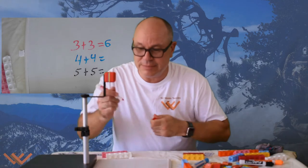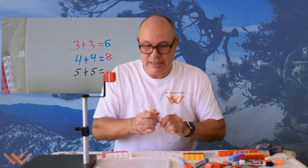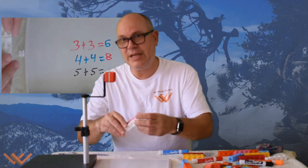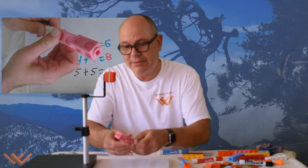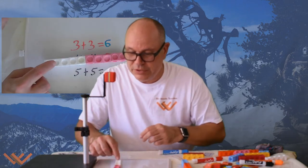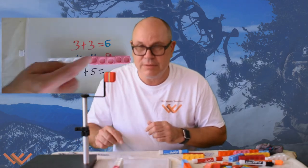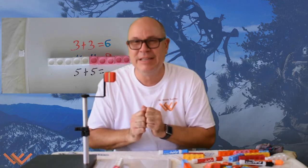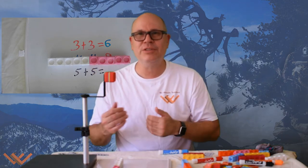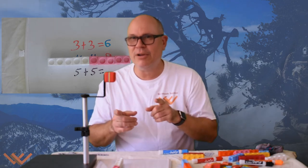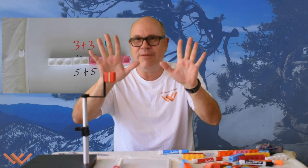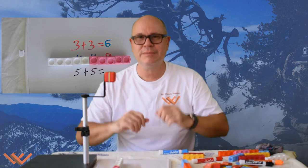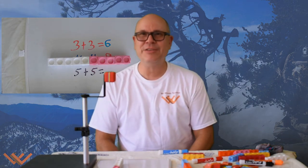Five and five make ten, you say? Let's take a look at that. One, two, three, four, five — one, two, three, four, five. So five and five make ten. You see how easy it is to add two numbers together? And you can count on: five, six, seven, eight, nine, ten. Counting on is okay too. Until next time, this is Mr. Woods Teaches.